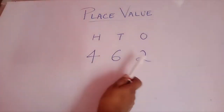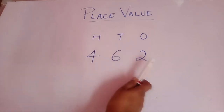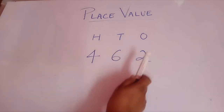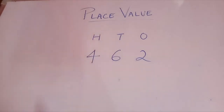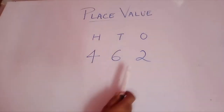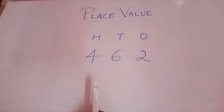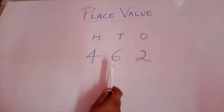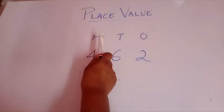For the number 462, how will you give the place value? Remember that you always start from the right side: 2 ones, 6 tens, and 4 hundreds. So 4 is in the hundreds place, 6 is in the tens place, and 2 is in the ones place. The symbol for ones is O, the symbol for tens is T, and the symbol for hundreds is H.